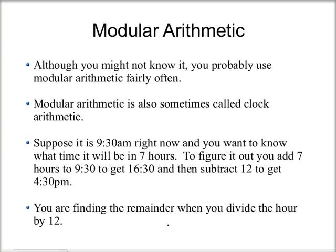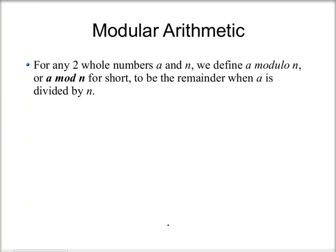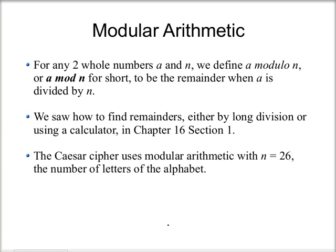If it is 9:30 a.m. right now and you want to know what time it will be in seven hours, you're going to add seven hours to 9:30, which makes 16:30, and then subtract 12 to get 4:30 p.m. So what you're doing here is finding the remainder when you divide the hour by 12. For any two whole numbers A and N, we define A modulo N, or A mod N for short, to be the remainder when A is divided by N. You can calculate A mod N by typing that into Google, or using long division or a calculator as covered in Chapter 16, Section 1.